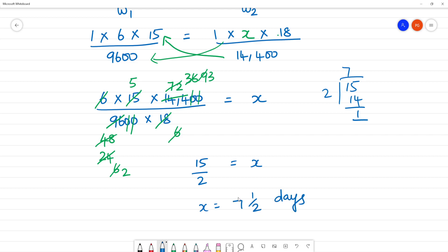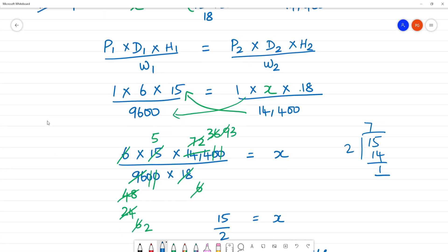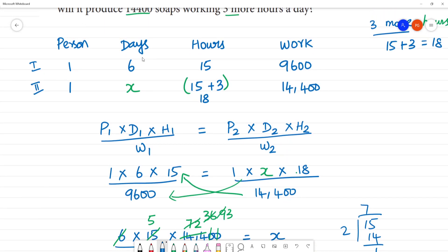7 and a half days. Clear? Working hours at the same time, work at the same time, days at the same time. So this is 7 and a half days.